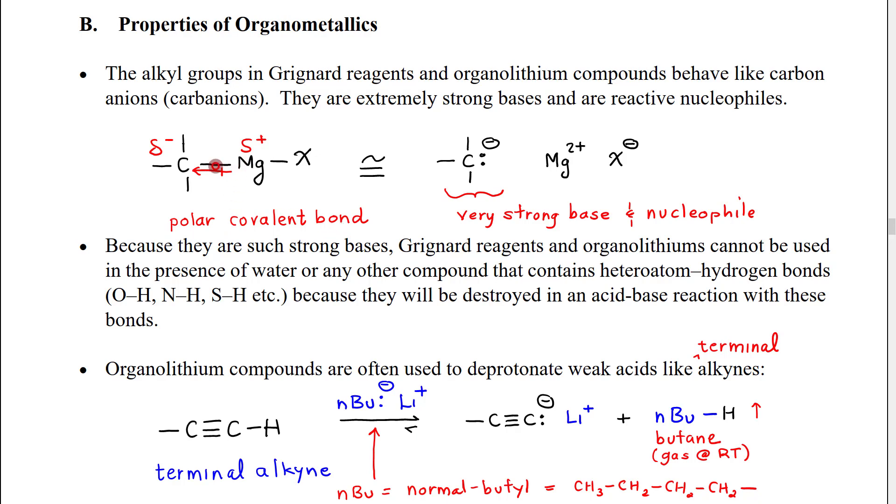What we see is that this bond is so polarized that it's just a few percent away from being completely separate species, carbon having essentially a hundred percent of a negative charge. In the Grignard reagent, it's probably closer to 80 to 90 percent, but it's a very large amount of negative charge.